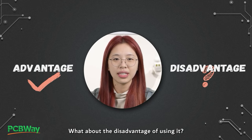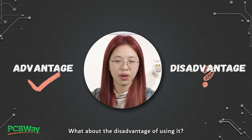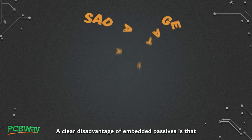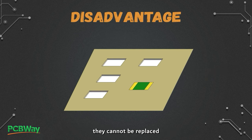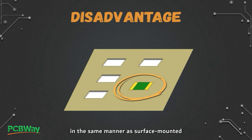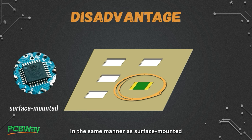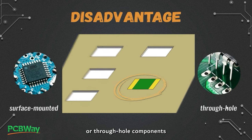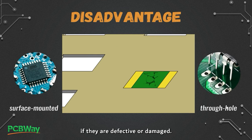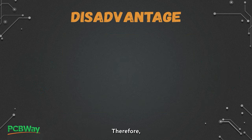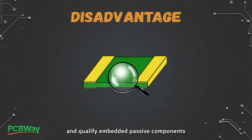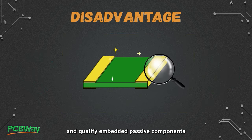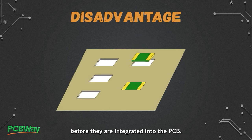What about the disadvantages of using it? A clear disadvantage of embedded passives is that they cannot be replaced in the same manner as surface-mounted or through-hole components if they are defective or damaged. Therefore, it's important to thoroughly test and qualify embedded passive components before they are integrated into the PCB.